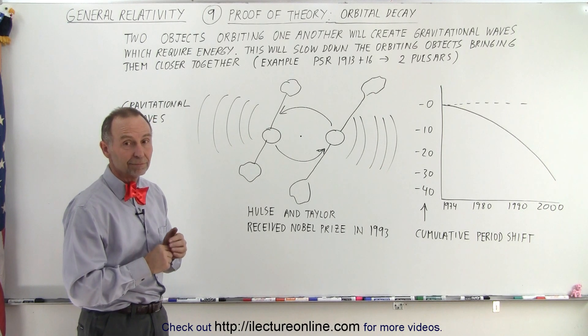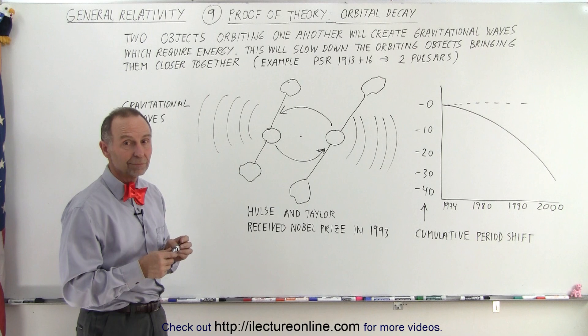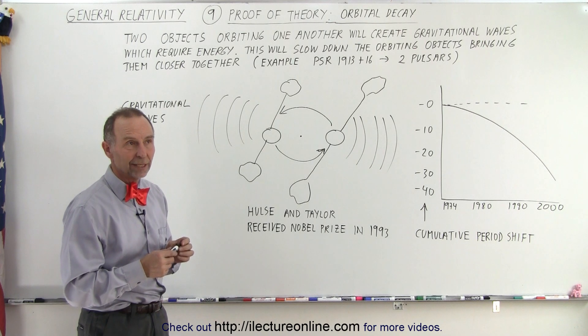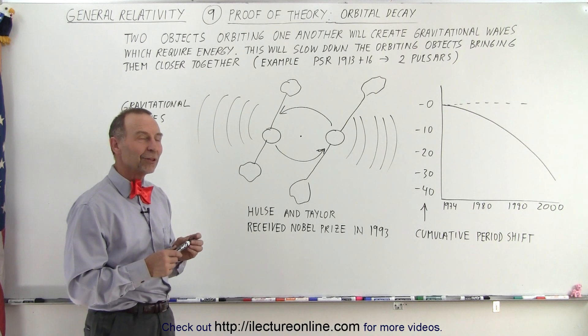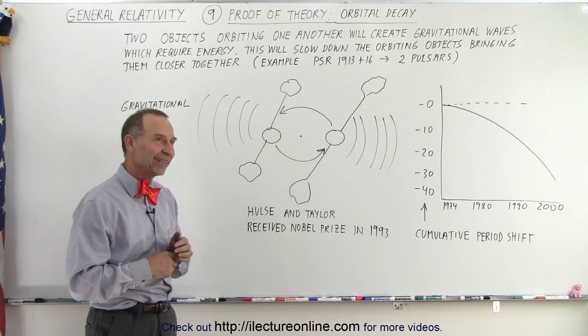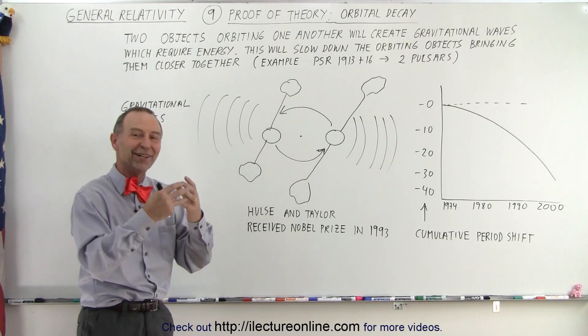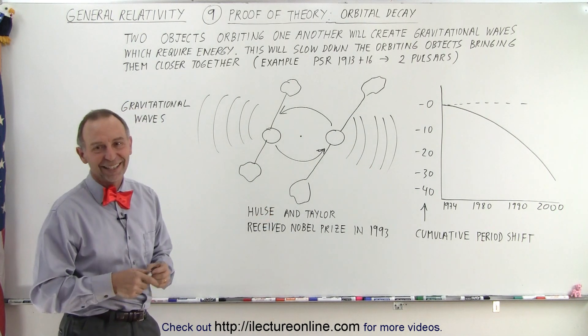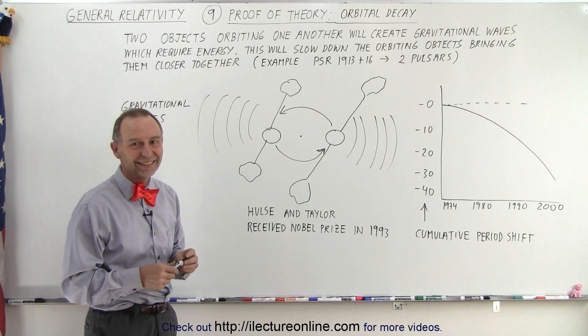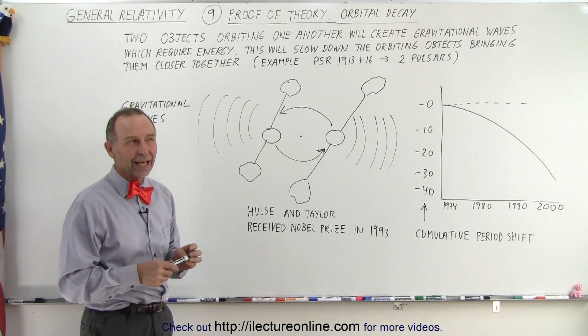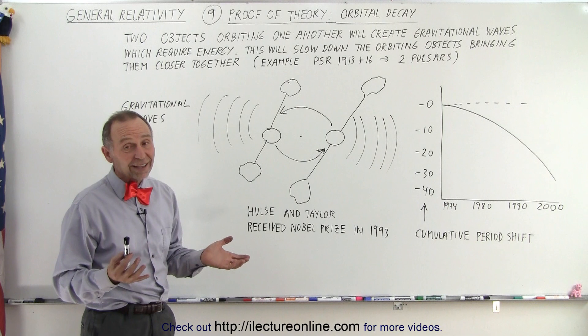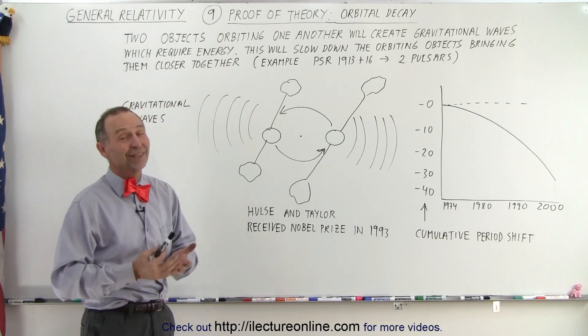So when two black holes collide with each other, does one gobble up the other? I don't know if you can say if one gobbles up the other, I think they gobble up each other. They become one, right? Two become one. So it's not like one is much bigger than the other. Usually they're not the same size. They become one.